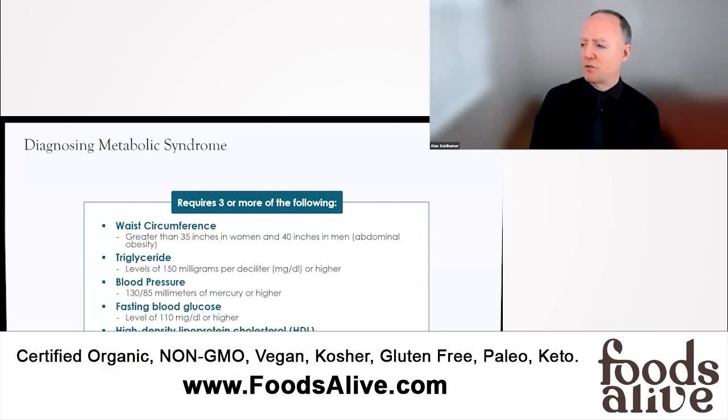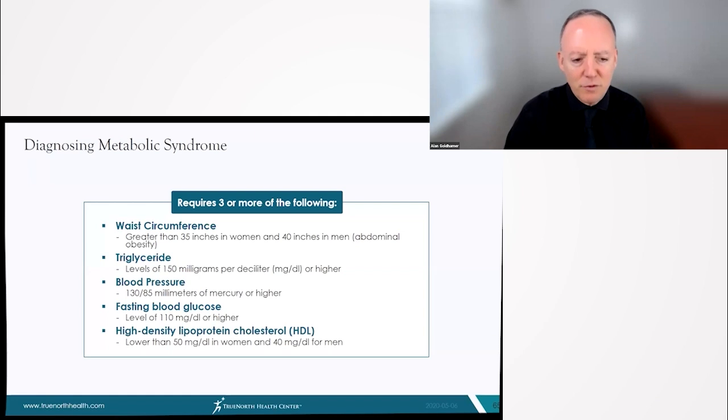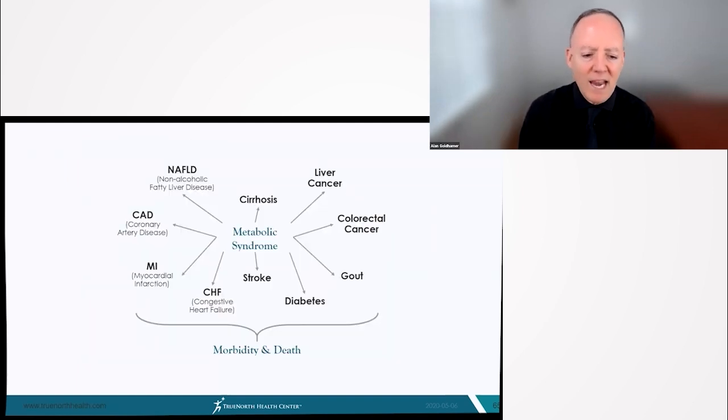Today, metabolic syndrome composes the major epidemic that's killing most people. If your waist circumference is too large, if you have elevated triglycerides or blood pressure or blood glucose, low HDL levels, if you have three or more of these, you're considered to have what's called metabolic syndrome. Most people will develop metabolic syndrome and they will have, without any question, increased risk of these conditions: non-alcoholic fatty liver disease, cirrhosis, liver cancer, colorectal cancer, gout, diabetes, stroke, congestive heart failure, myocardial infarction. This is what's killing the people that you know.